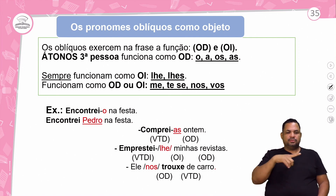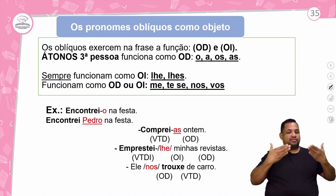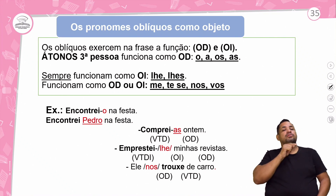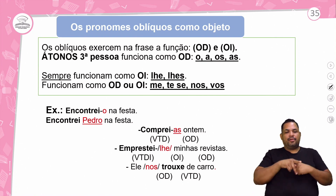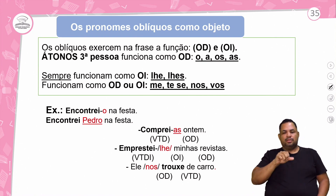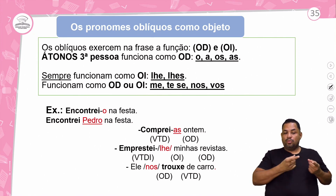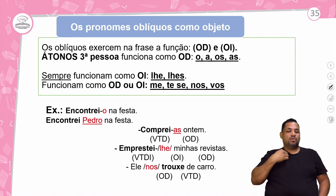Encontrei-o na festa — é a mesma coisa que 'encontrei Pedro na festa'. Encontrei quem? Pedro. Pedro é objeto direto, e o 'o', que é o pronome oblíquo átono, ele é objeto direto. Comprei-as ontem. Comprei o quê? As roupas. Então esse 'as' substitui 'as roupas'.